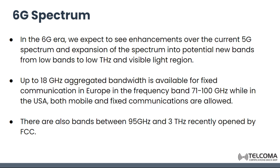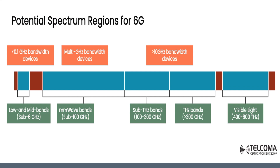Up to 18 GHz aggregated bandwidth is available for fixed communication in Europe, in the frequency bands 71 to 100 GHz, while in the USA both mobile and fixed communications are allowed. There are also bands between 95 GHz and 3 Terahertz recently opened by the FCC — this is a potential spectrum region for 6G.